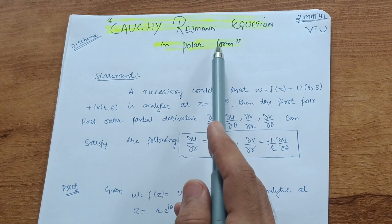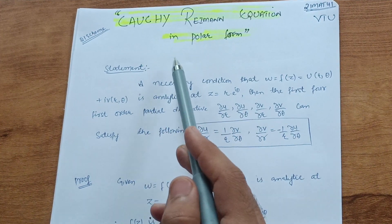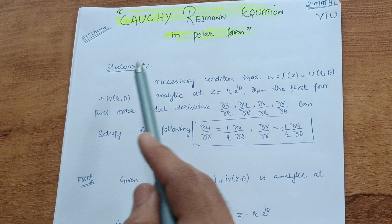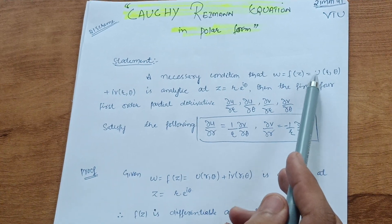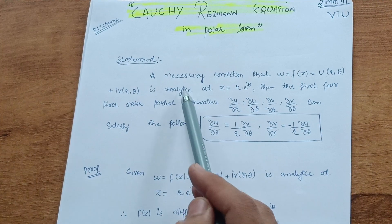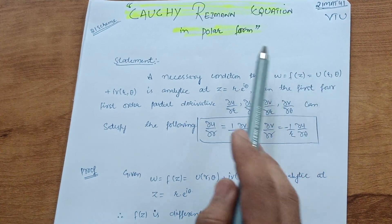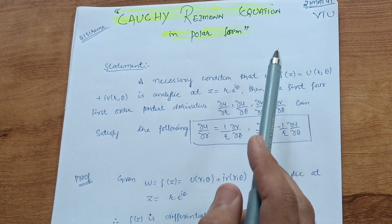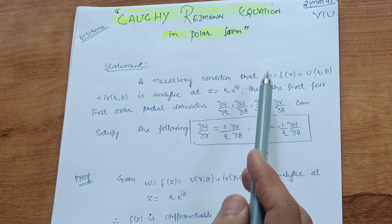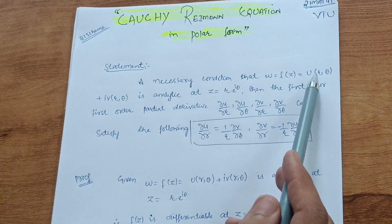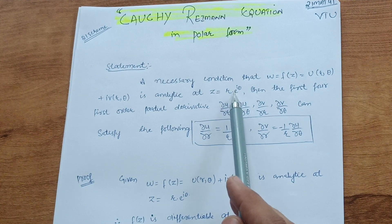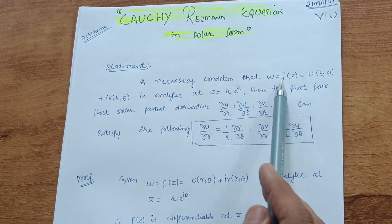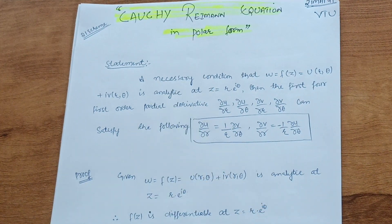This is for the 21 scheme — the Cauchy-Riemann equation in polar form is a seven marks question as far as VTU examination is concerned. First we will see the statement, then we will go for its proof. The statement: a necessary condition that w = f(z) = u(r, θ) + iv(r, θ) is analytic — here r, θ are the polar coordinates, analogous to Cartesian coordinates x, y — and the function is analytic at z = r·e^(iθ). I have discussed what 'analytic' means in the previous video; a link is provided in the description.